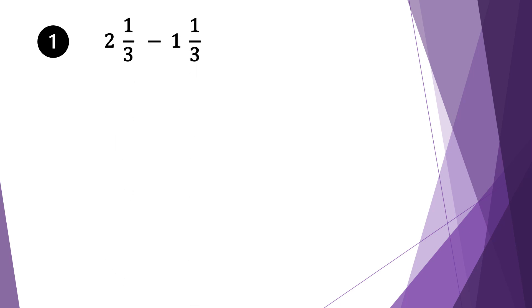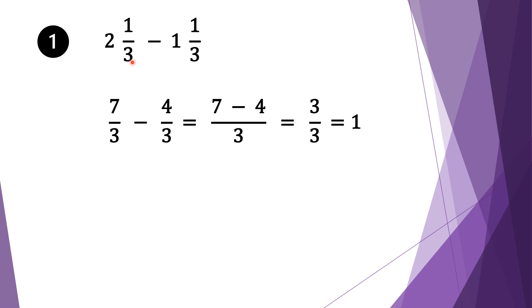We have two and one third minus one and one third. When we have a mixed fraction, we always try to convert into two normal fractions. We multiply our denominators and add with the numerators: three times two is six, six plus one is seven, and we bring our denominator as it is. We bring our subtraction sign down, and do the same for the second fraction: three times one is three, plus one is four, and we bring our denominator as it is.